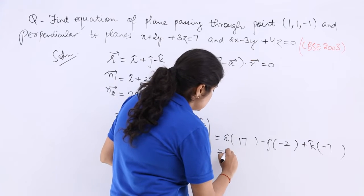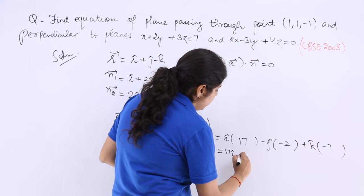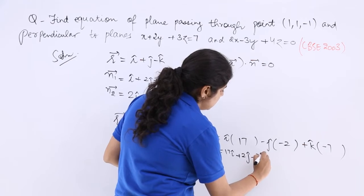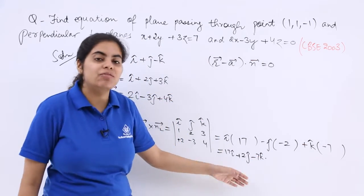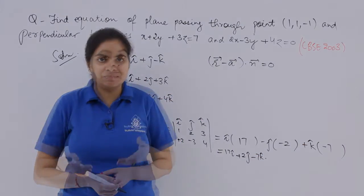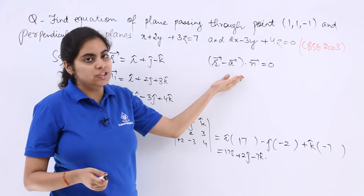Removing the third column and the first row: minus 3 minus 4 is minus 7. So this is 17i cap plus 2j cap minus 7k cap. This is what we have obtained from the cross product. Now after we have done this, we are just going to put it here.